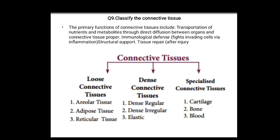Primary functions of connective tissue include: transportation of nutrients and metabolites through direct diffusion between organs and connective tissue proper; immunological defense — fighting invading cells; combating inflammation when it occurs; providing structural support; and tissue repair at the time of injury.